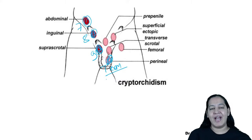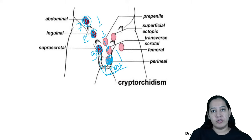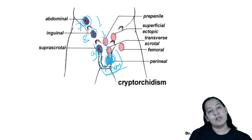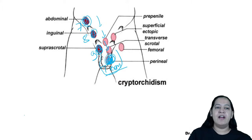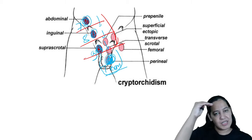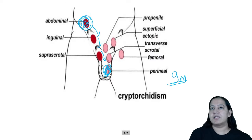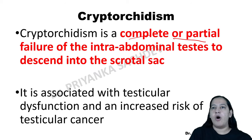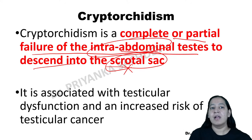In cryptorchidism, the testis fails to descend and remains intra-abdominally. The child is asymptomatic, but the scrotum is empty (unilateral or bilateral). After puberty, the child will be infertile because sperm and testosterone are not formed. More critically, the undescended testis has a 50 times higher risk of developing testicular carcinoma, especially seminoma. Surgery — orchidopexy — is performed to bring the testis into the scrotum, ideally between 1 to 2 years of age.